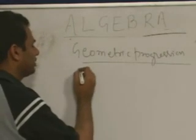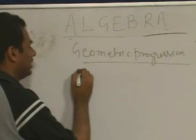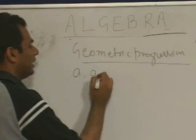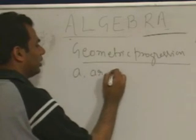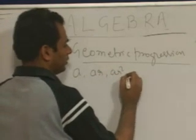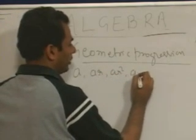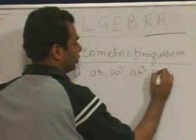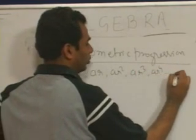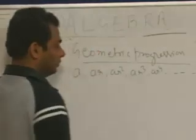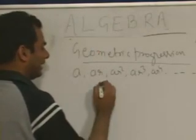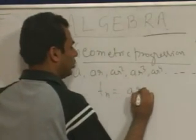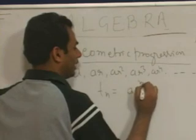In case of geometric progression, the first term is a, the second term is ar, the third term is ar², the fourth term is ar³, ar⁴, and so on. The nth term Tₙ is always given as a into r to the power n minus 1.